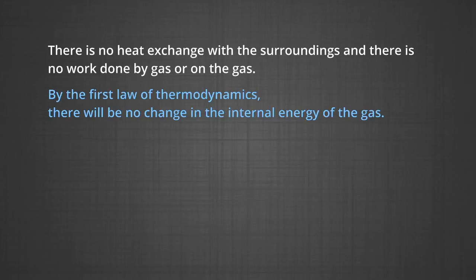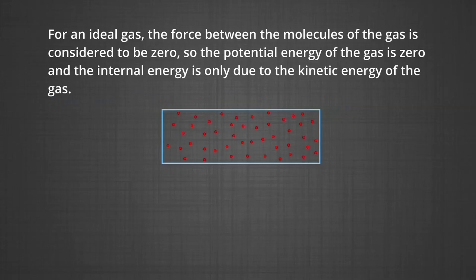By the first law of thermodynamics, this means there will be no change in the internal energy of the gas. For an ideal gas, the force between the molecules is considered to be zero, so the potential energy is zero and the kinetic energy is the internal energy of the gas. A constant internal energy therefore implies constant kinetic energy.